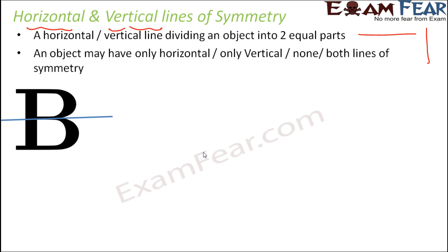you would see that there is a horizontal line which divides B exactly into two equal parts which coincide each other completely. Right? So this line is a horizontal line of symmetry because the line is a horizontal line but at the same time it divides B into two equal halves. So it is a line of symmetry as well. So this is horizontal line of symmetry.